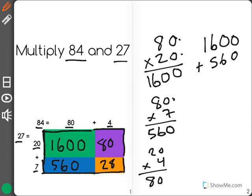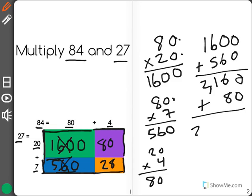So I'm going to start by adding 1600 plus 560 which will give me 2160. I'm going to X these out because I've already added them. Next I need to add in 80 more which will give me 2240.